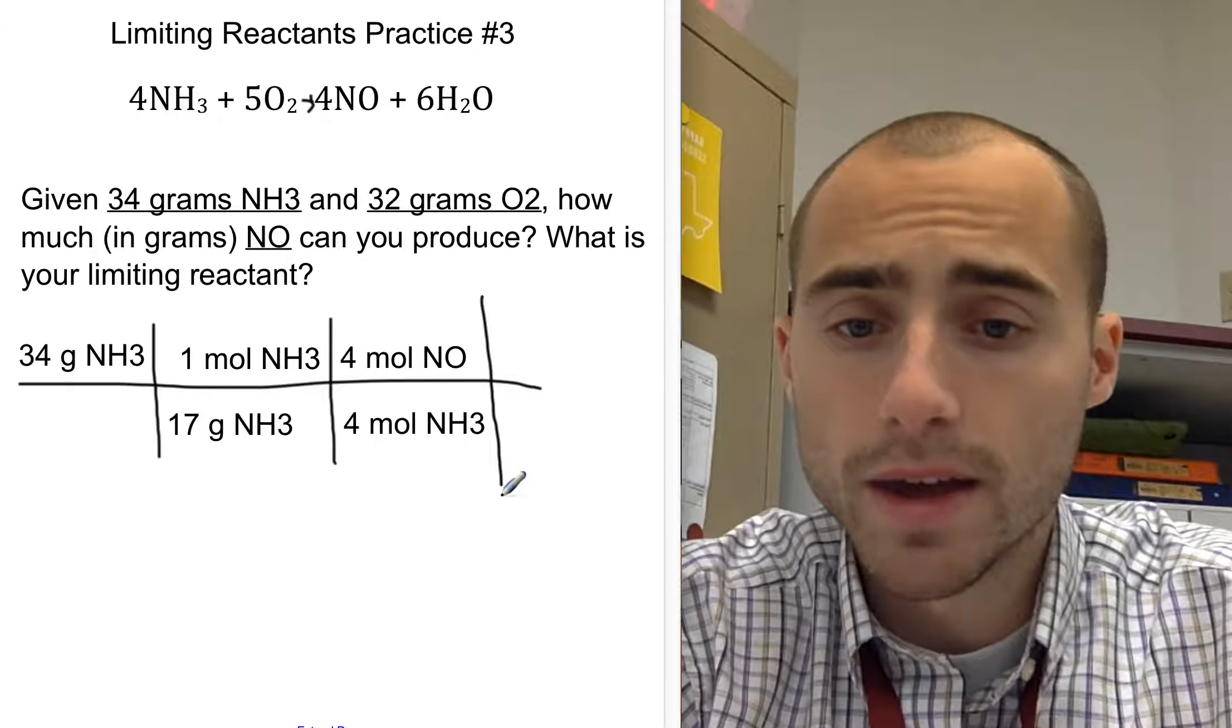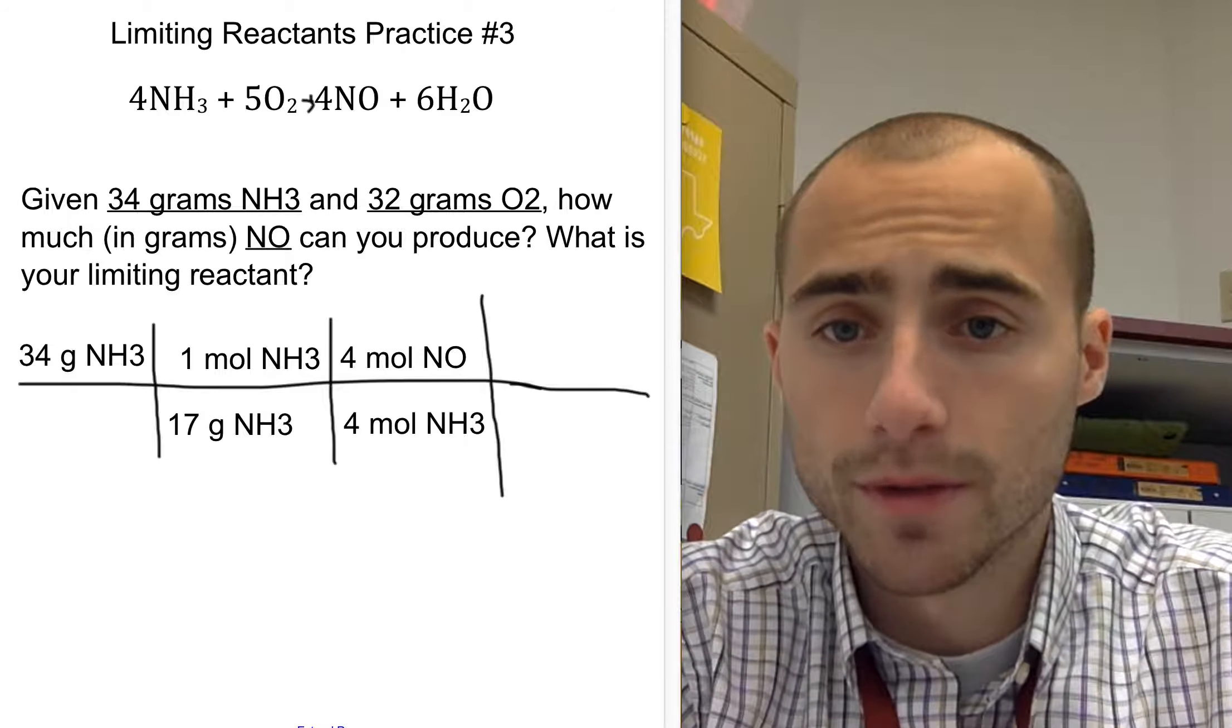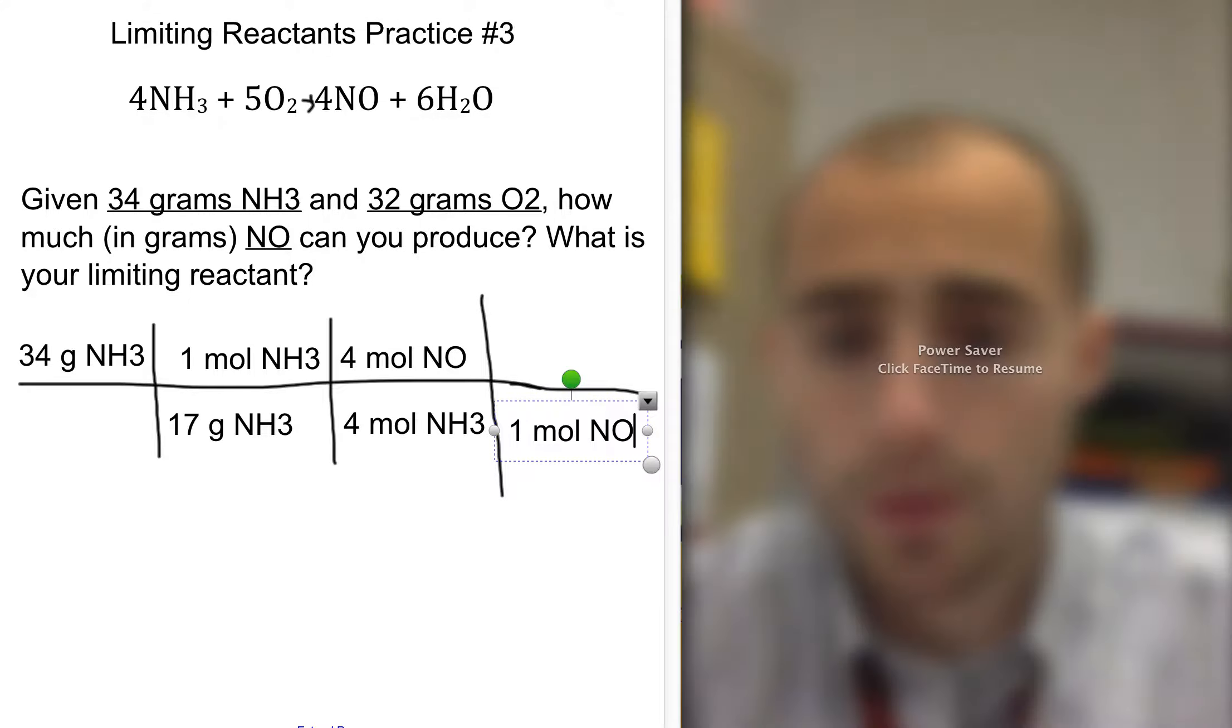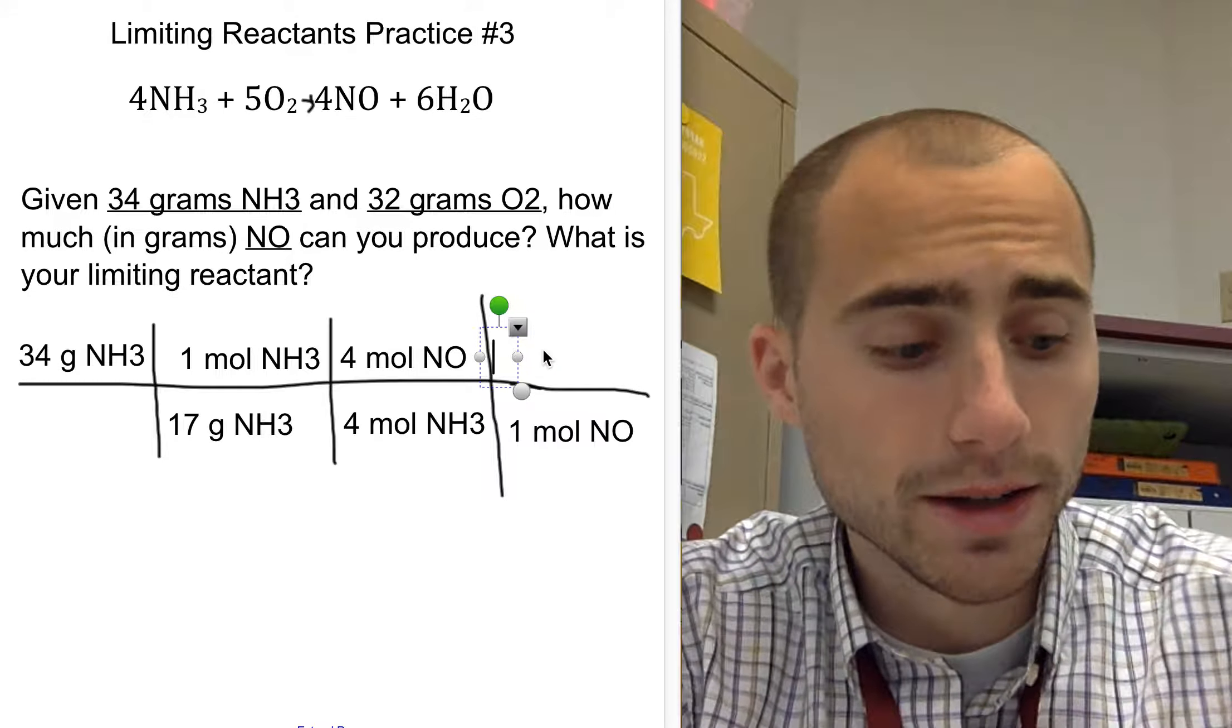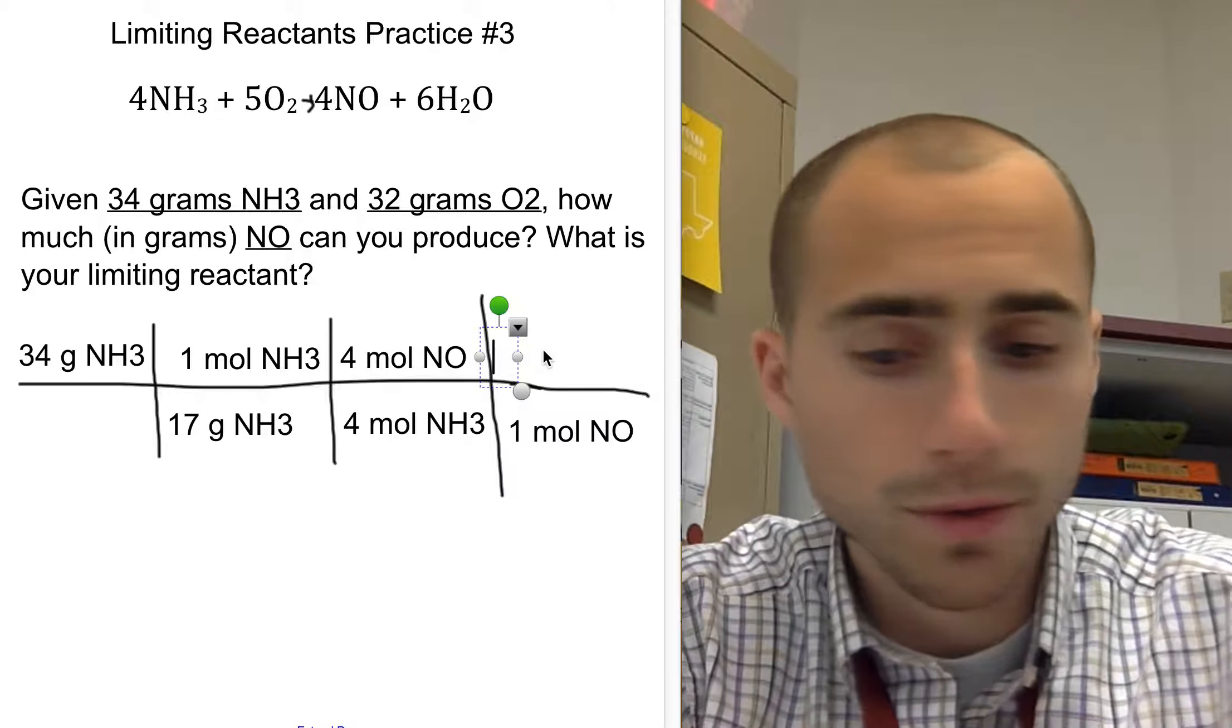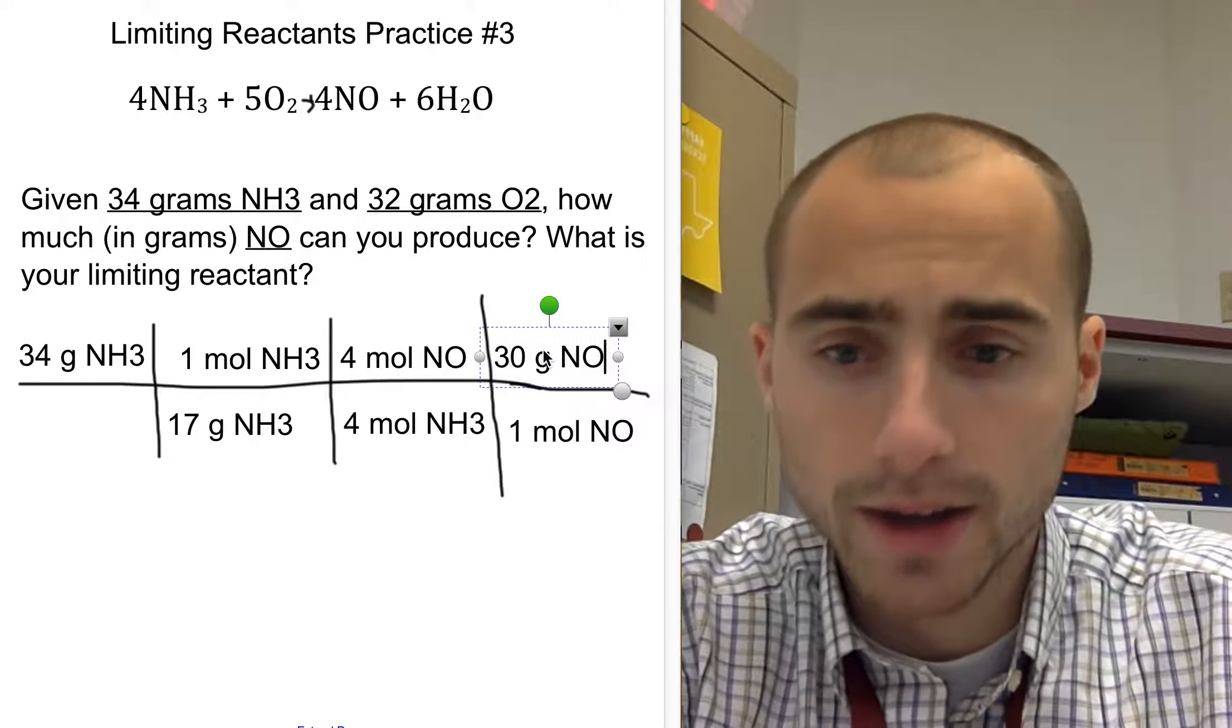Then I have to go from moles of NO into grams of NO. So I put one mole NO, nitrogen monoxide equals, and then I would put the molar mass of nitrogen monoxide, which is 14 plus 16, which equals 30, 30 grams nitrogen monoxide right there.